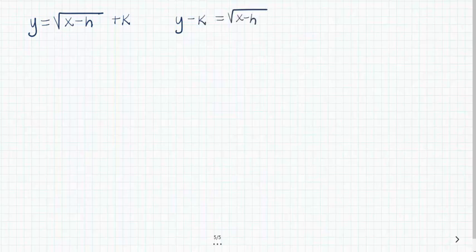So just remember, if you see that constant value added or subtracted here, that's the actual k value. But if it's on this side, it would be the opposite of the k value. The h value has to be inside the radical with the x, and it is the opposite of h.